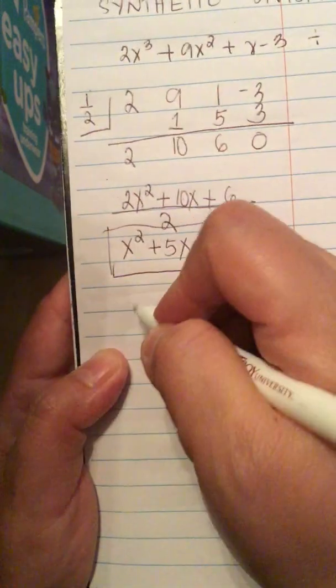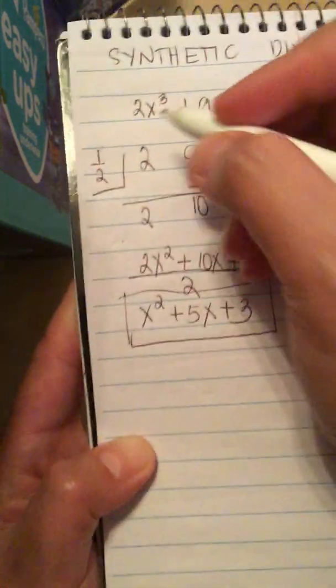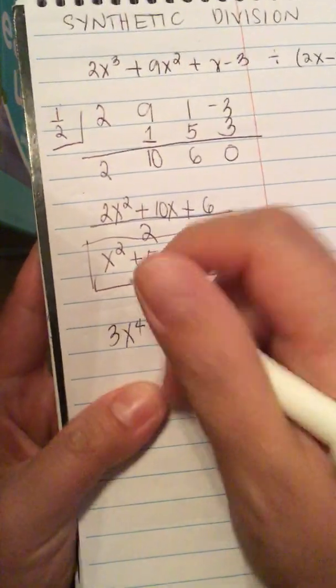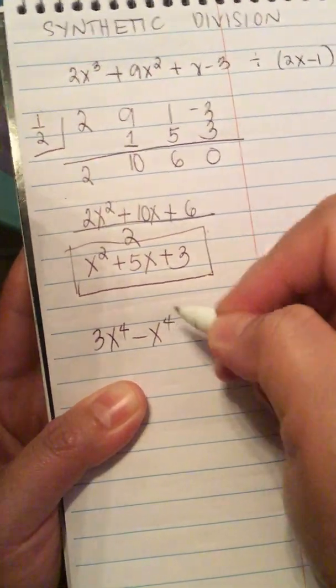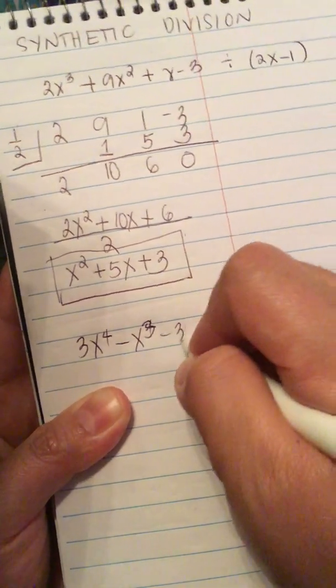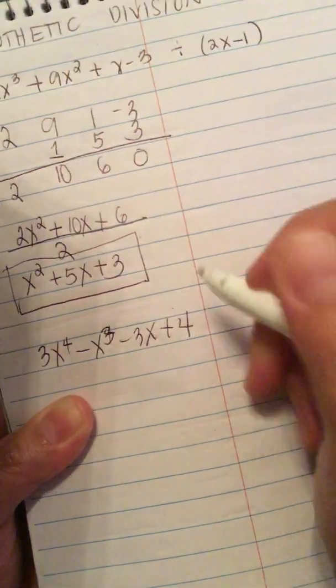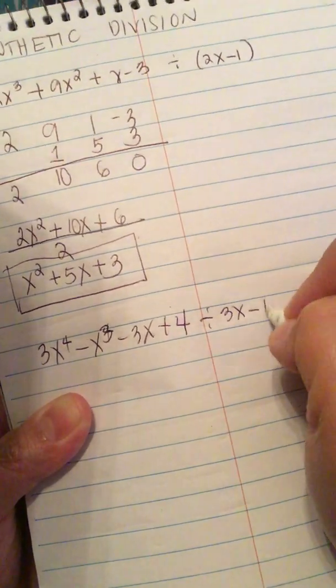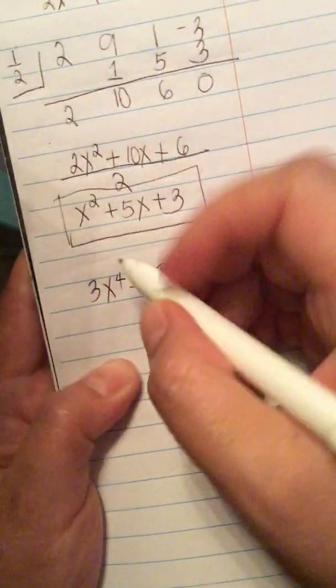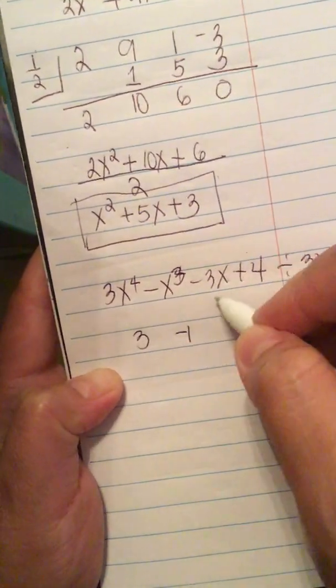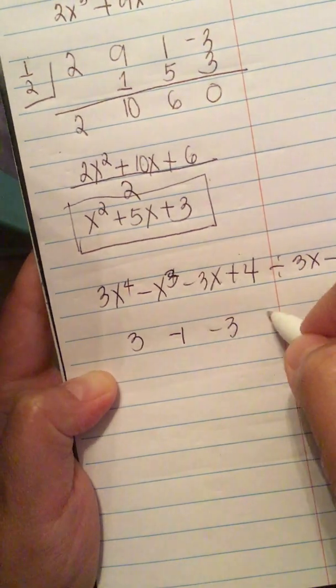So we have 3x to the fourth minus x cubed minus 3x plus 4. And this is divided by 3x minus 1. So we write down again the coefficient, 3, minus 1, minus 3, 4.